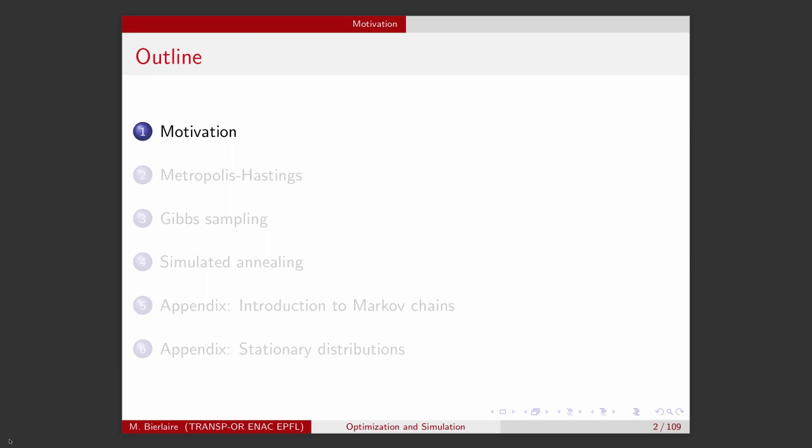I will then explain the most important of these methods called the Metropolis-Hastings algorithm. I will then describe a specific instance of the Metropolis-Hastings algorithm that is called Gibbs sampling. And I will finally make the link to optimization by talking about an algorithm called simulated annealing that is basically derived from the Metropolis-Hastings algorithm, but used for optimization and not simulation.